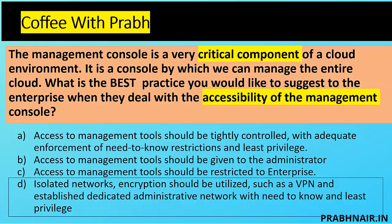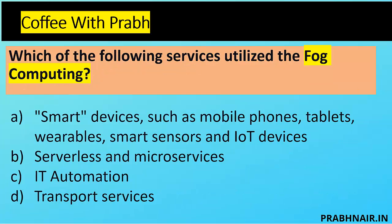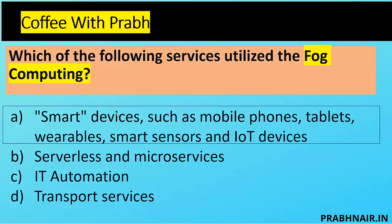Next coffee shot: which of the following services utilizes fog computing? Option A: smart devices such as mobile phones, tablets, wearables, smart sensors, and IoT. Option B: serverless microservices. Option C: IT automation. Option D: transport services. Option C (IT automation) is a common general service — eliminated. Option D (transport services) doesn't fit. Option B (serverless/microservices) is part of containerization used in general computing. Fog computing is dedicated specifically to IoT and smart devices, so the answer is A.